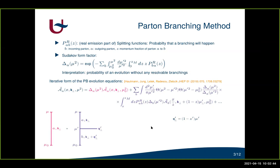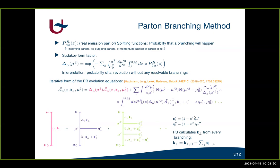The second term represents all partons b that have an evolution from scale mu_0 up to some scale mu prime, at which a branching occurs emitting a parton, and afterwards the parton continues evolution as flavor a without any further resolvable branchings. There are also terms with two or more branchings. In the parton branching method we calculate the transverse momentum from this whole evolution chain, and an equation in such a form can be solved with Monte Carlo methods.